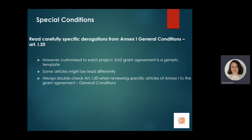We also recommend carefully reading article 1.20, which includes specific derogations from Annex 1 general conditions. The KA2 grant agreement is a generic template also applicable to centralized actions managed directly by the executive agency in Brussels, so some articles in Annex 1 might need to be read differently. Always double-check article 1.20 when referring to specific articles in Annex 1 general conditions.